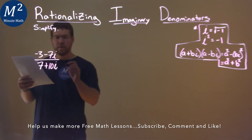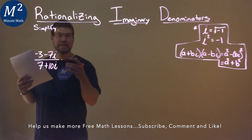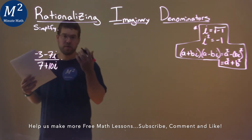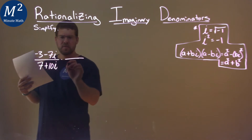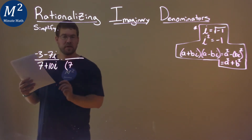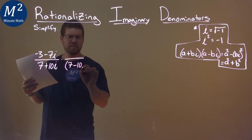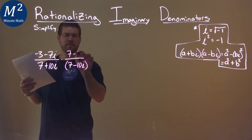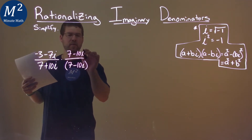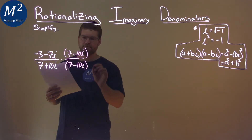What we're going to do is multiply this by its conjugate over itself, or the denominator's conjugate. So 7 plus 10i — its complex conjugate is 7 minus 10i. Pretty simple. 7 minus 10i again in the numerator, and we've got a fraction.